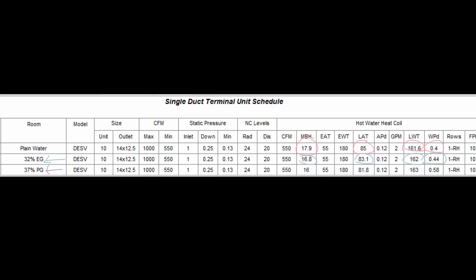Now looking at the third row with 37% propylene glycol, you can see that the MBH has gone down again, the leaving air temperature has gone down to 81.8, the leaving water temperature has gone up a little bit, and the pressure drop has gone up quite a bit.